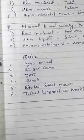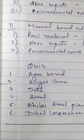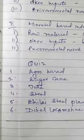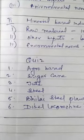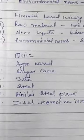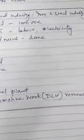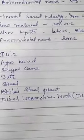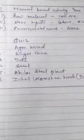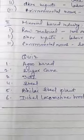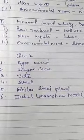The quiz questions in the yellow box: first one is agro-based industry, second one is sugar cane, third is jute, fourth is steel, fifth is Vilay steel plant, sixth is diesel locomotive works — DLW, Varanasi. Kindly do these questions in your classwork copy along with some additional homework questions.